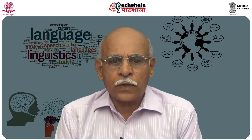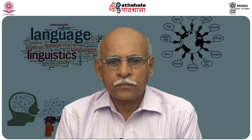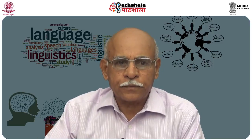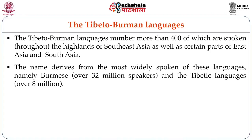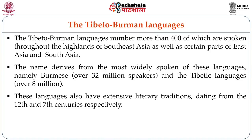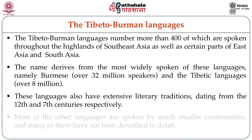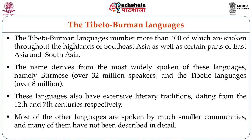Sino-Tibetan languages were known for a long time by the name Indochinese, which is now restricted to the languages of Indochina. Tibeto-Burman languages number more than 400, spoken throughout the highlands of Southeast Asia as well as certain parts of East Asia and South Asia. The name derives from the most widely spoken of these languages, namely Burmese with over 32 million speakers and Tibetan with over 8 million speakers. These languages also have extensive literary traditions dating from the 12th and 7th centuries respectively. Most of the other languages are spoken by much smaller communities and many have not been described in detail.